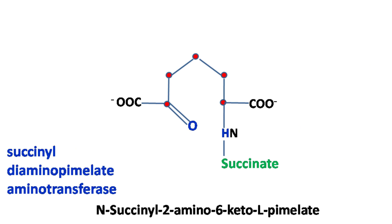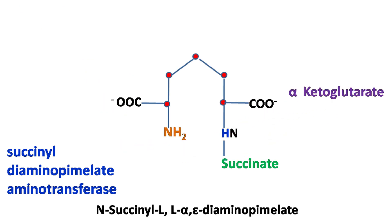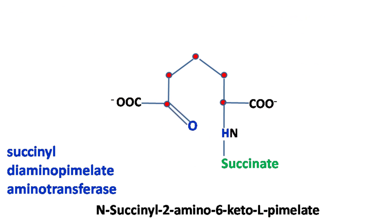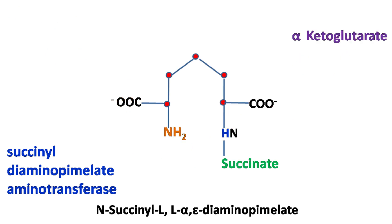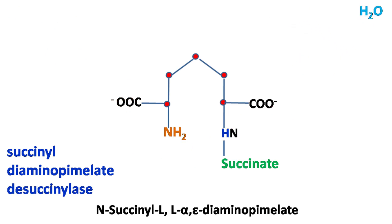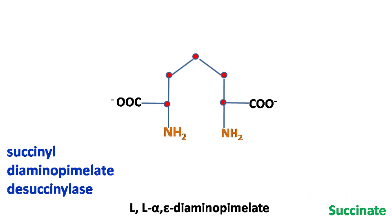Next, glutamate donates its amino group to the keto group, resulting in the formation of N-succinyl-diaminopimelate. The succinyl group is then removed by the D-succinylase enzyme, resulting in the formation of diaminopimelate.